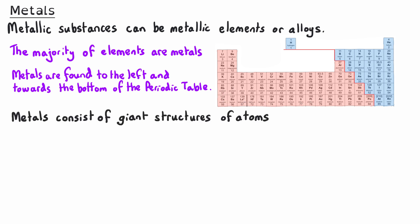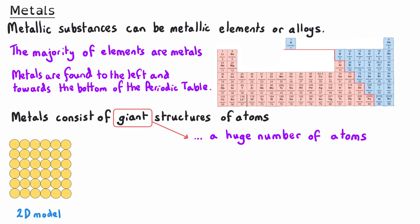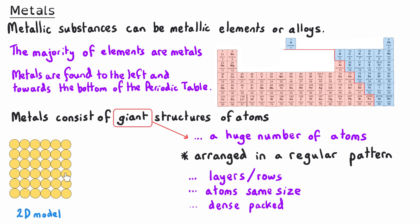Substances made of metals consist of giant structures of atoms. They're referred to as giant as they're made up of a huge number of atoms, and they are arranged in a regular pattern. You can see that from this two-dimensional diagram: there are clear layers or rows, a lot of symmetry, the atoms are all the same size, and they are densely packed together — very close together. These aspects of the structure influence the properties of metals.